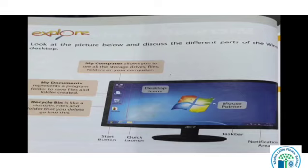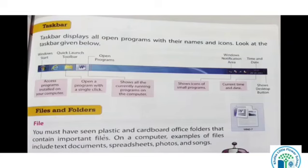Task bar wali line hai jahan pe humko sara notification area show kertai hai. Koi message aaye to jo application humm use kar rahe hai, current wali, woh humm niche show kerti hai. Humm na WordPad ke under sikhate hai, paint mein bhi dekha tha. Task bar displays all open programs with their names and icons. Task bar kya display kertai — sara programs and names and icons ko display kertai. Task bar kya display kertai hai — start Windows, jo humara window hai na, start button wala.